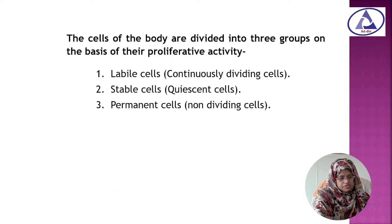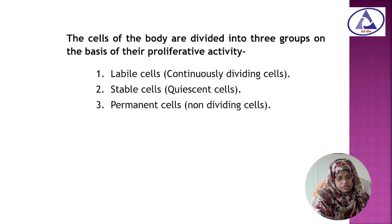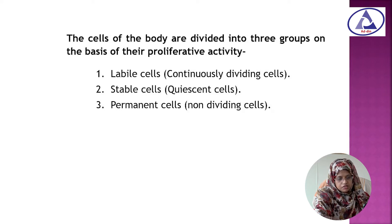Now, what are the cells of the body? The cells of the body are divided into three groups on the basis of their proliferating activities: labile cells, stable cells, and permanent cells.